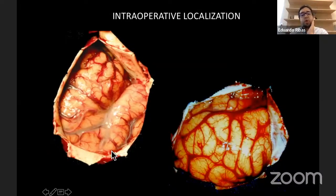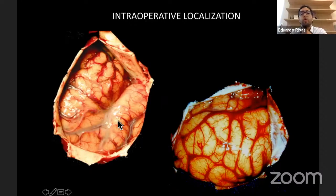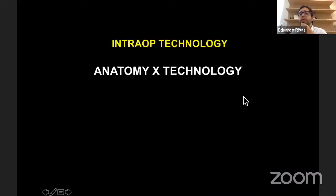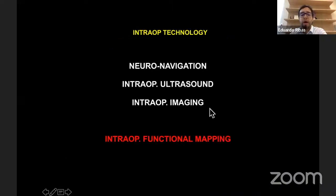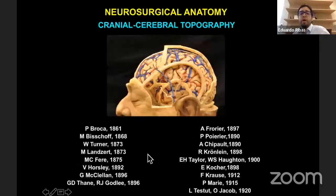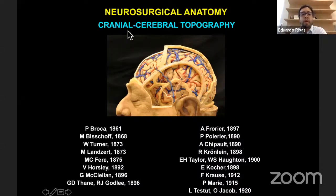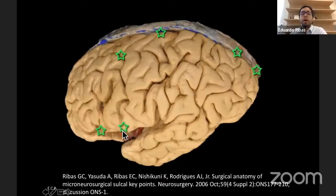The neurosurgical application of this anatomy is that the surface of the frontal lobe is difficult to see during surgery because vessels, pia mater, and arachnoid cover the surface, making the sulci hard to identify. So we use anatomy and technology to guide us — ultrasound and intraoperative imaging when available. In Brazil, neural navigation is not available in all operating rooms, so our group, led by Dr. Guillermo Ribas, developed a set of cranial-cerebral key points to identify the main sulci.